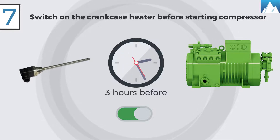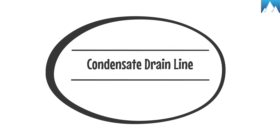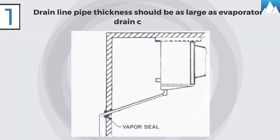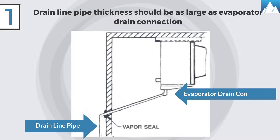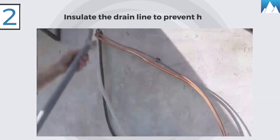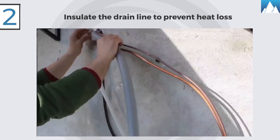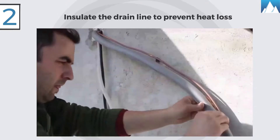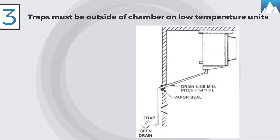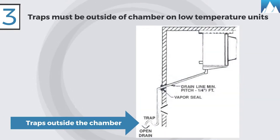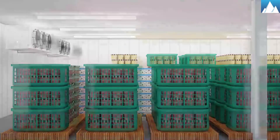Seven, switch on the crankcase heater three hours before starting the compressor when you are starting the unit for the first time. Condensate drain line: One, thickness of drain line pipe should be at least as large as the evaporator drain connection. Two, it is recommended that the drain line be insulated to prevent heat loss. Three, traps on low temperature units must be outside of refrigerated enclosures.